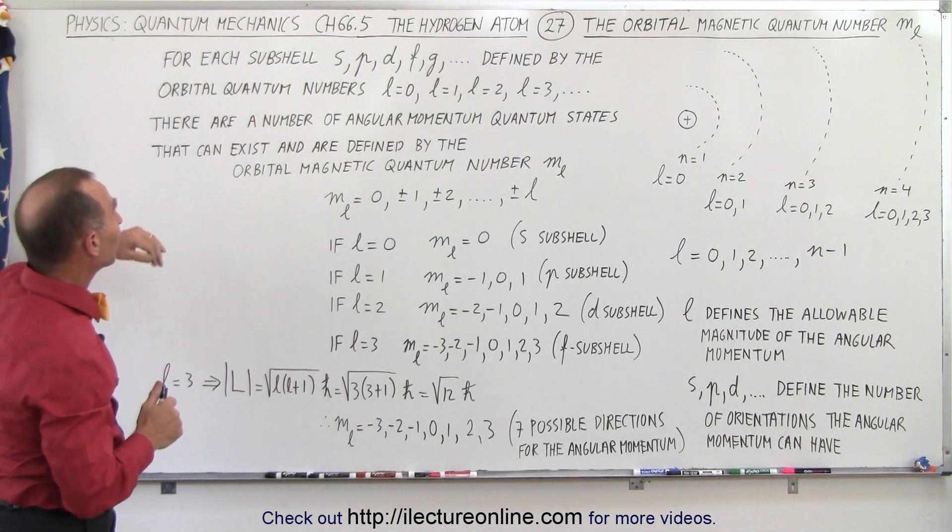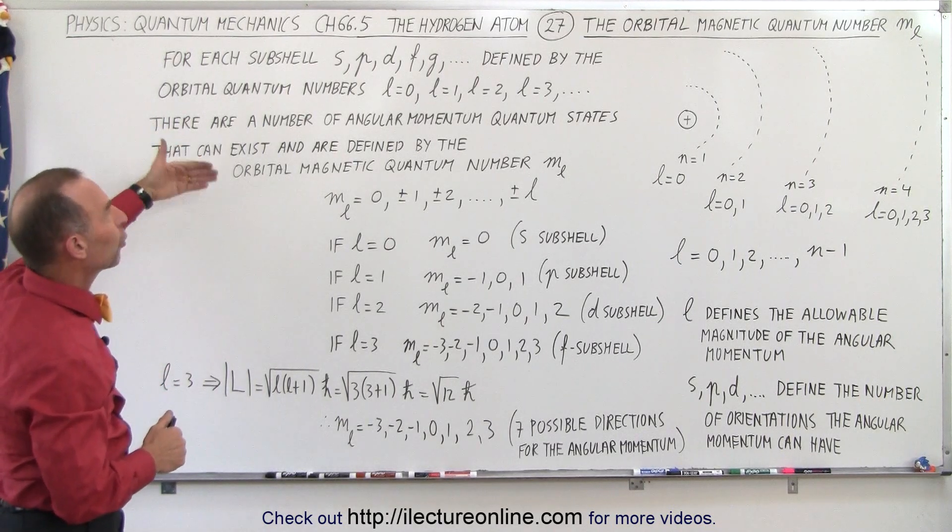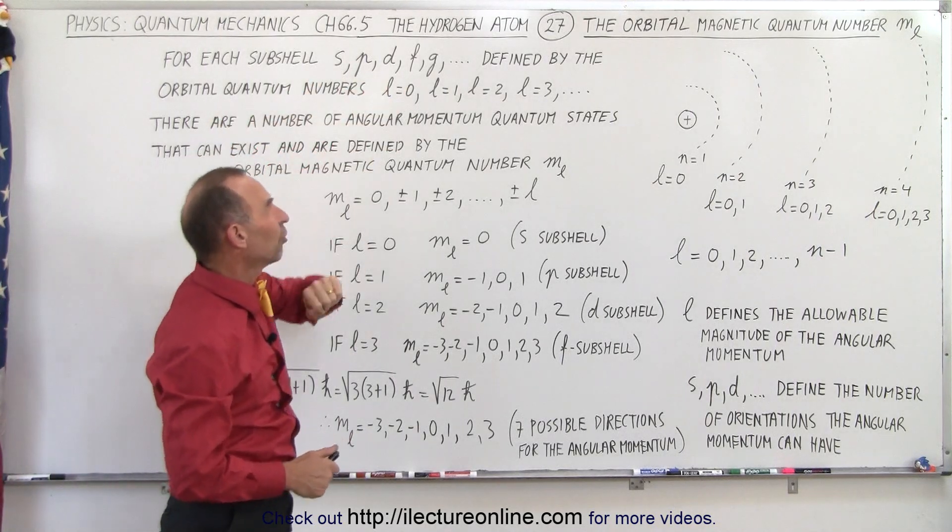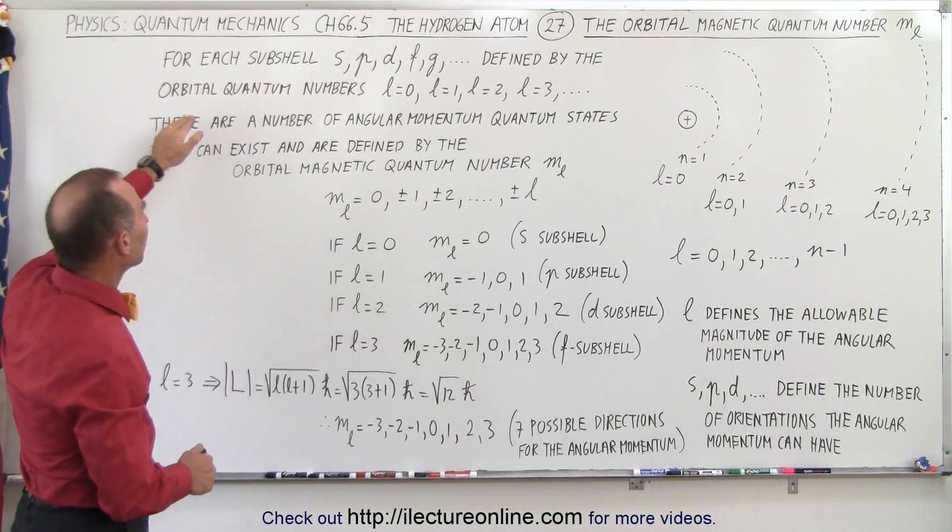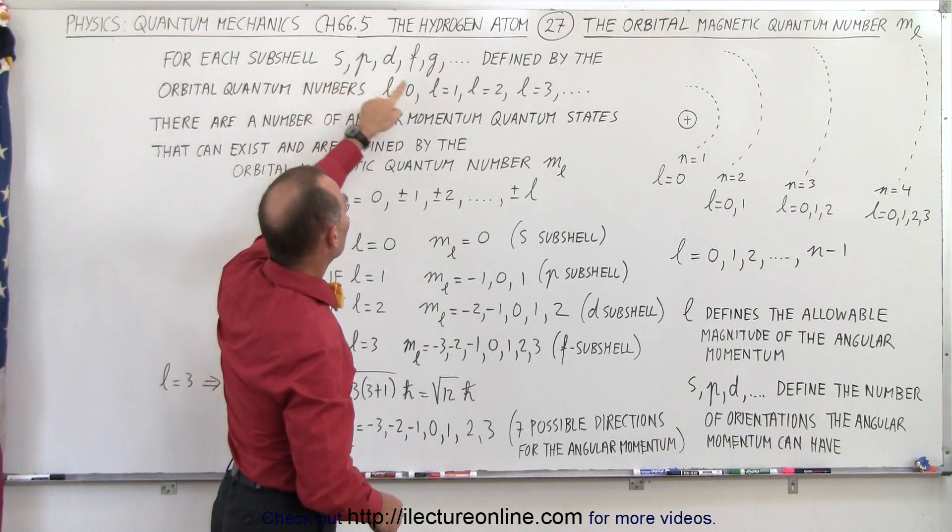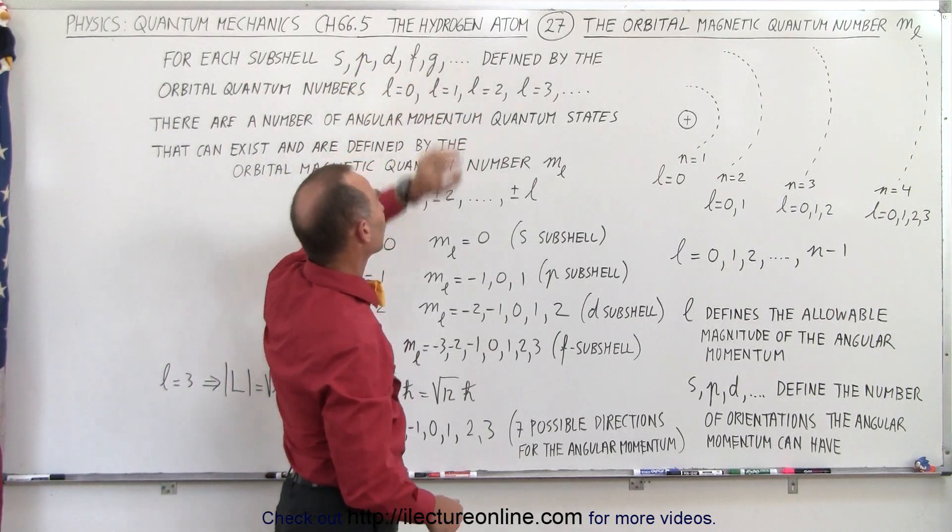So we now realize that we have subshells that are defined by the orbital quantum number L, and those subshells are S, P, D, F, G, and so forth. They're defined by the value given to L, the orbital quantum number, so when L equals 0 the subshell is S, when L equals 1 the subshell is P, when L equals 2 the subshell is D, and so forth.